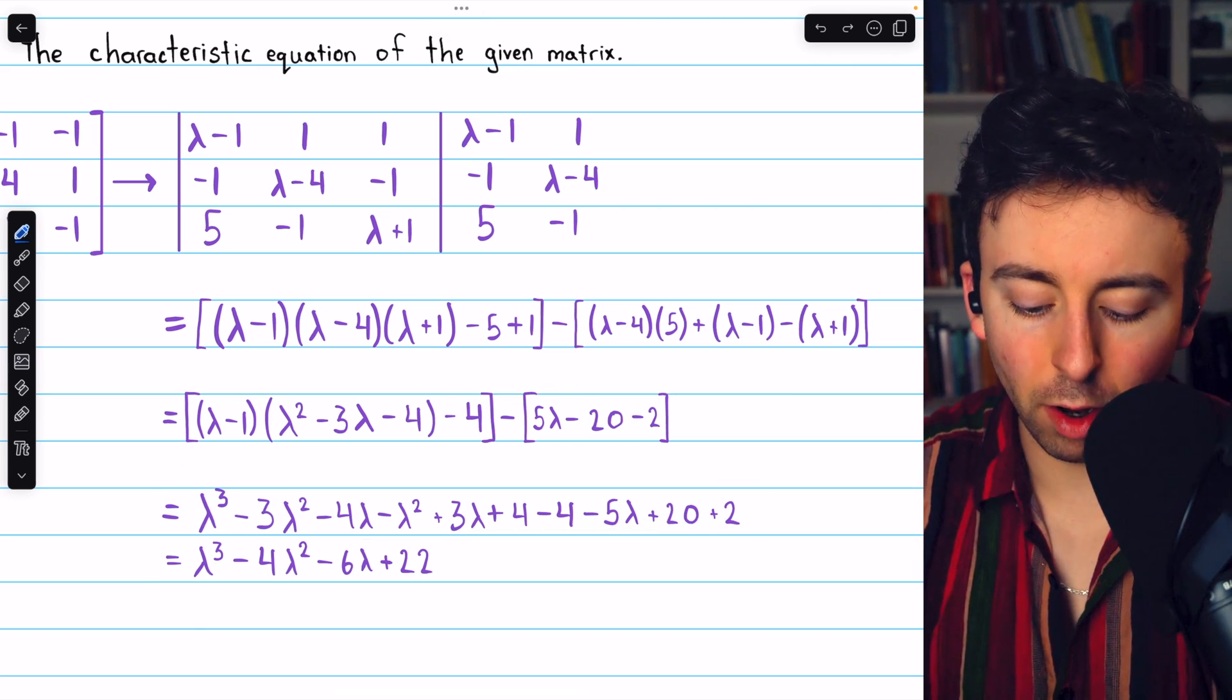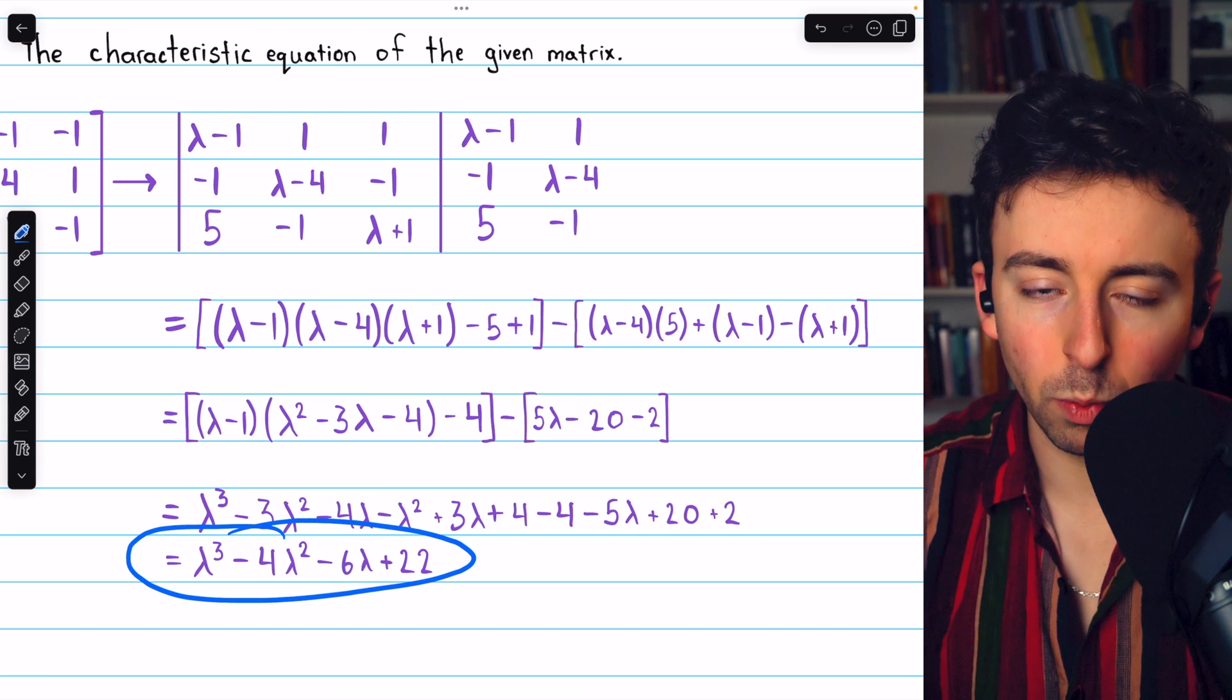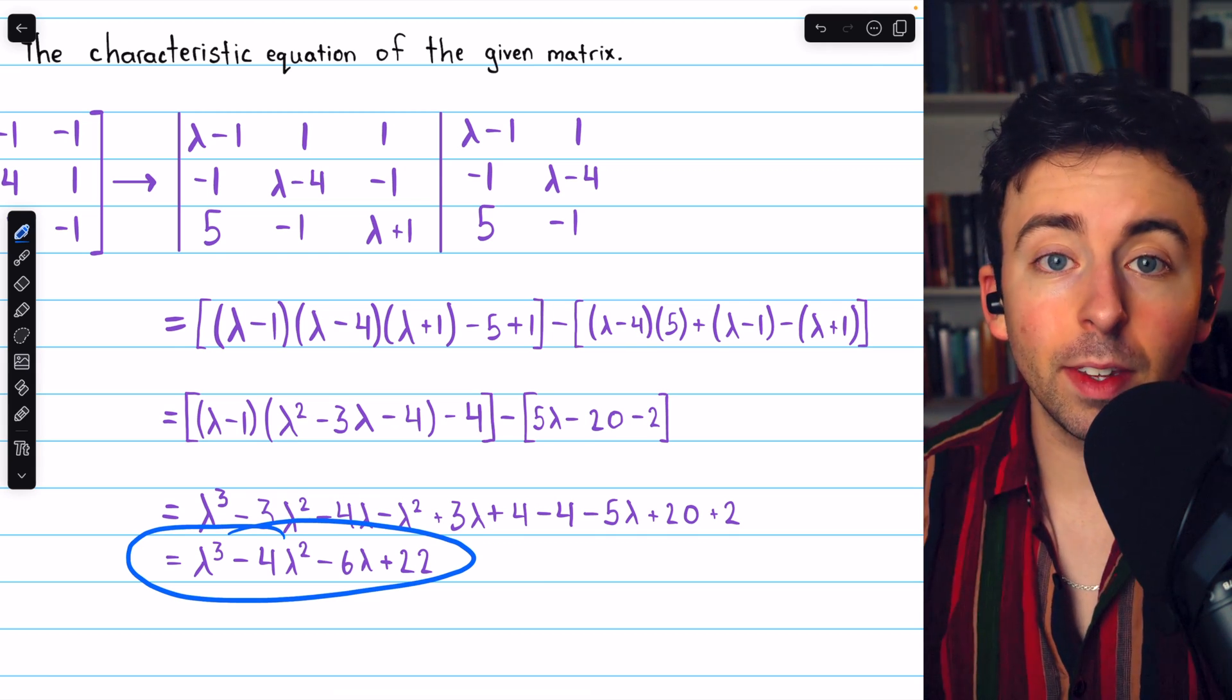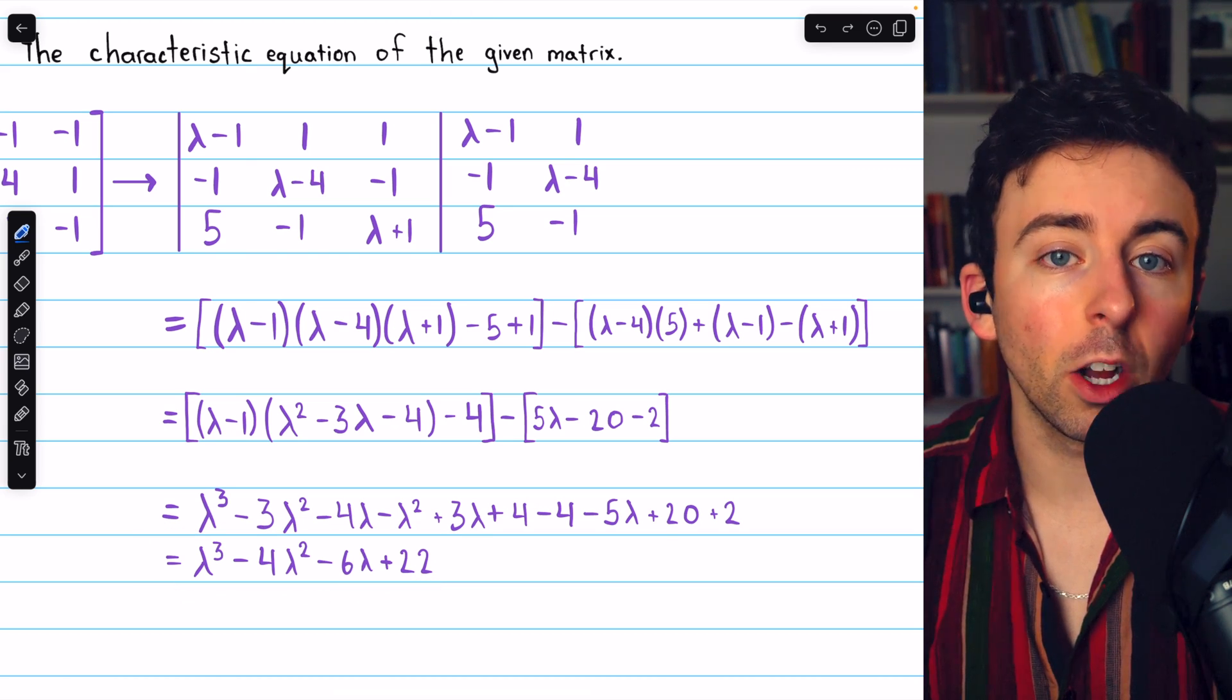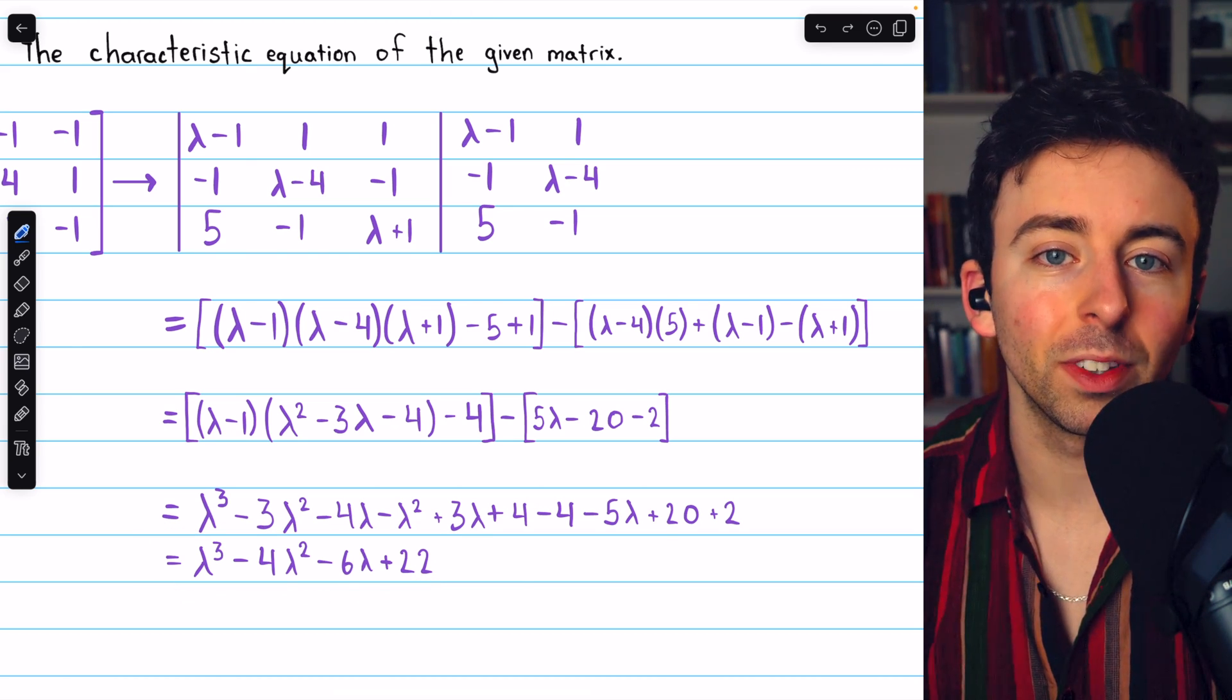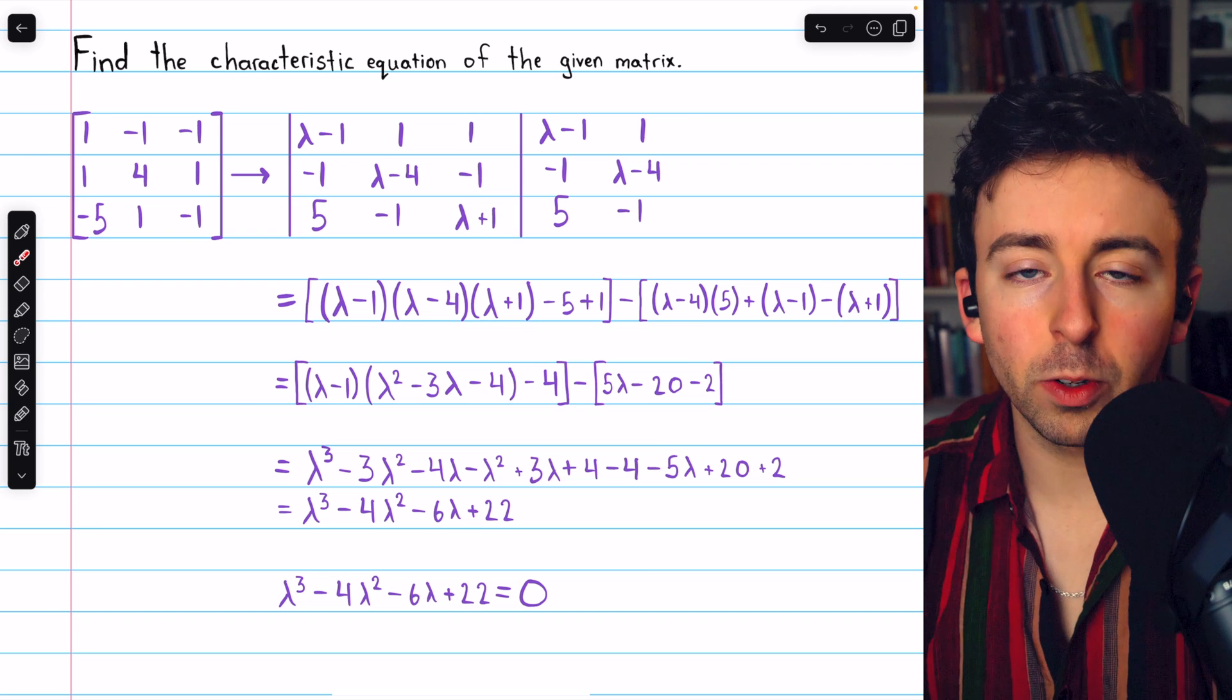Finally, combining like terms, we arrive at this, what we would call the characteristic polynomial. This is the determinant of the matrix. So to find the characteristic equation, we just set this equal to 0. And that is our characteristic equation.